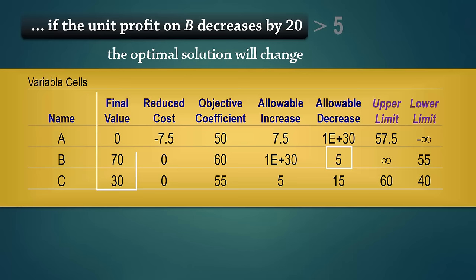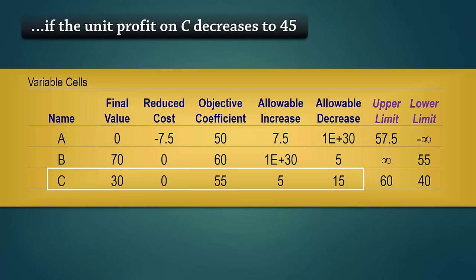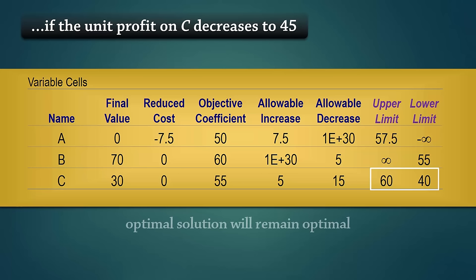And what will happen if the unit profit on C decreases to 45 from its current value of 55? You can see here that 45 is between 40 and 60. So the optimal solution will remain optimal, but the total profit now becomes 5550.